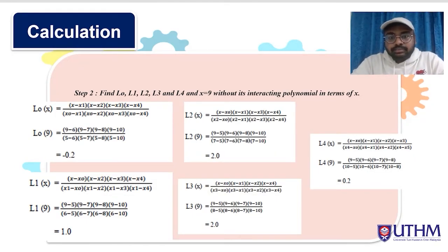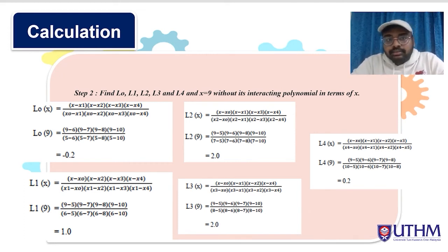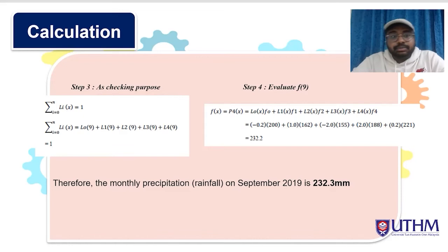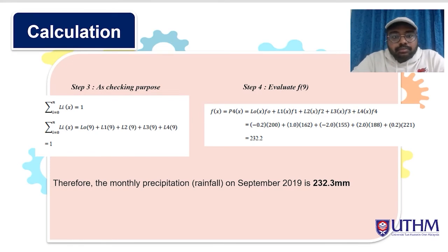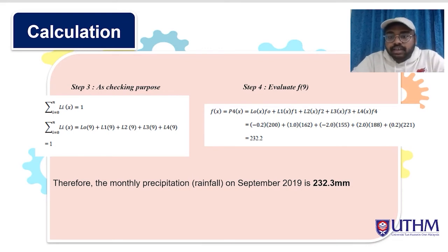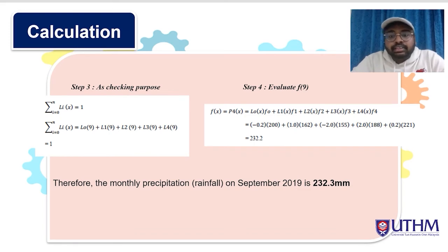We are using the Lagrange interpolation method, where we find L0, L1, L2, L3, and L4 at x equals 9, without their interpolating polynomials in terms of x. This is how we carried out the calculation by hand. Then we proceed with step 3, where we check the sum of Li(x) from i=0 to n at x equals 9, which should equal 1 — and we confirmed it does. We then proceed with step 4 to evaluate f(9). We found that the monthly precipitation rainfall for September is 232.3 mm.